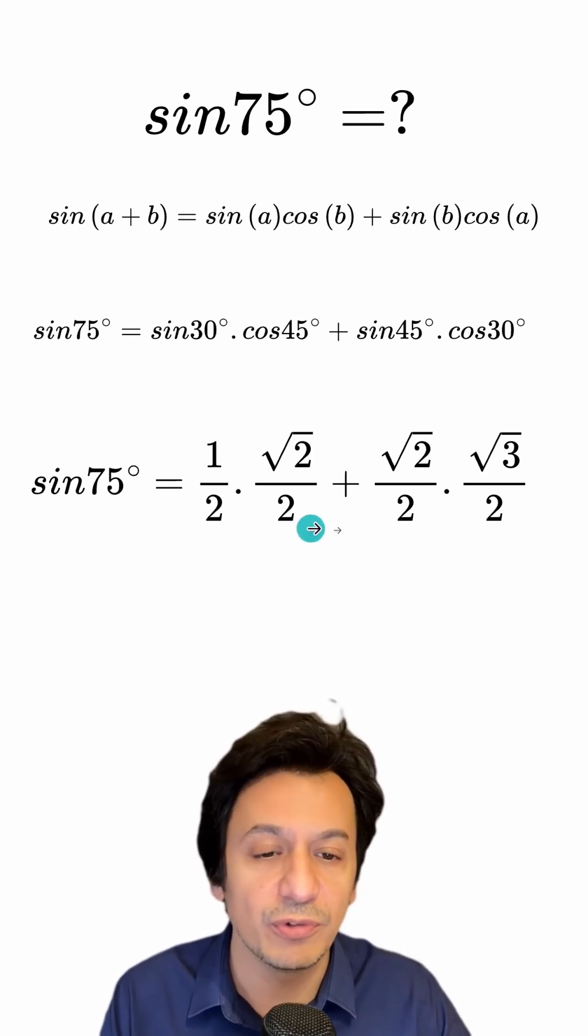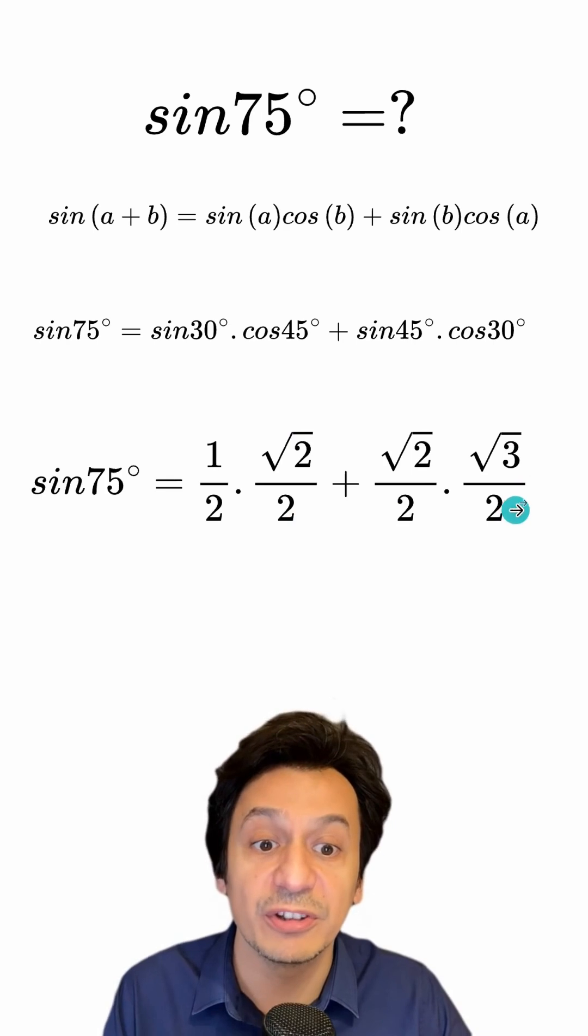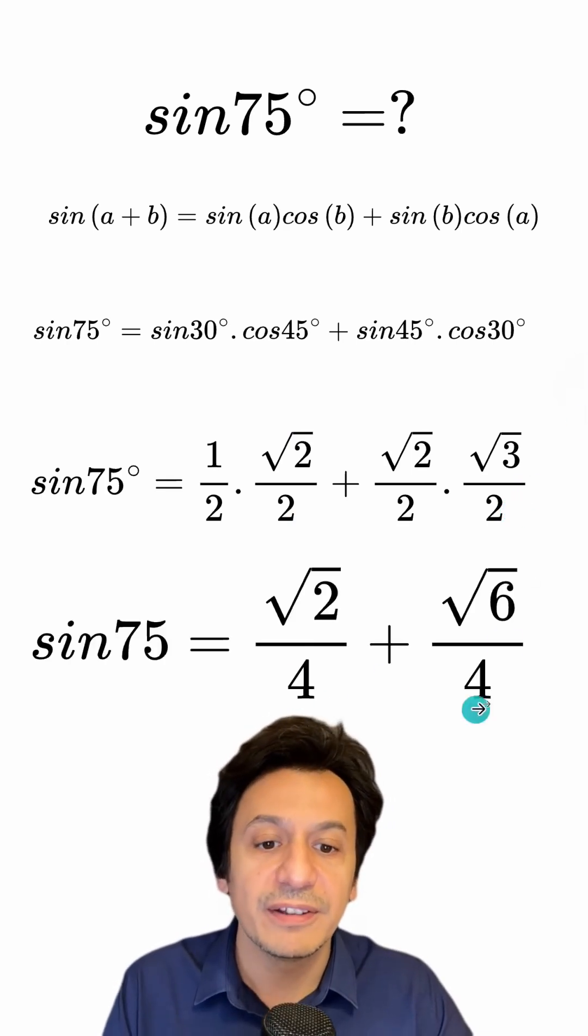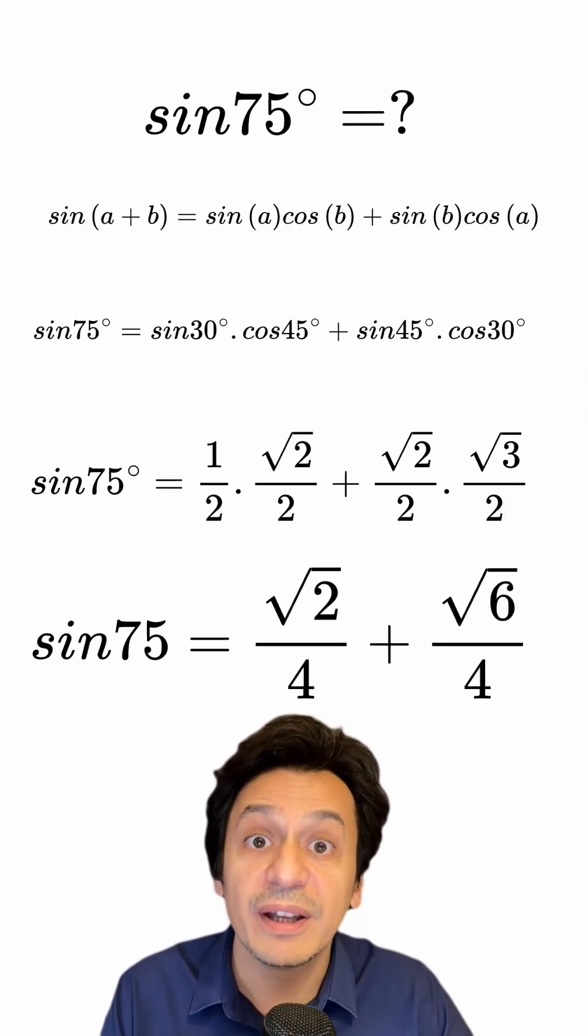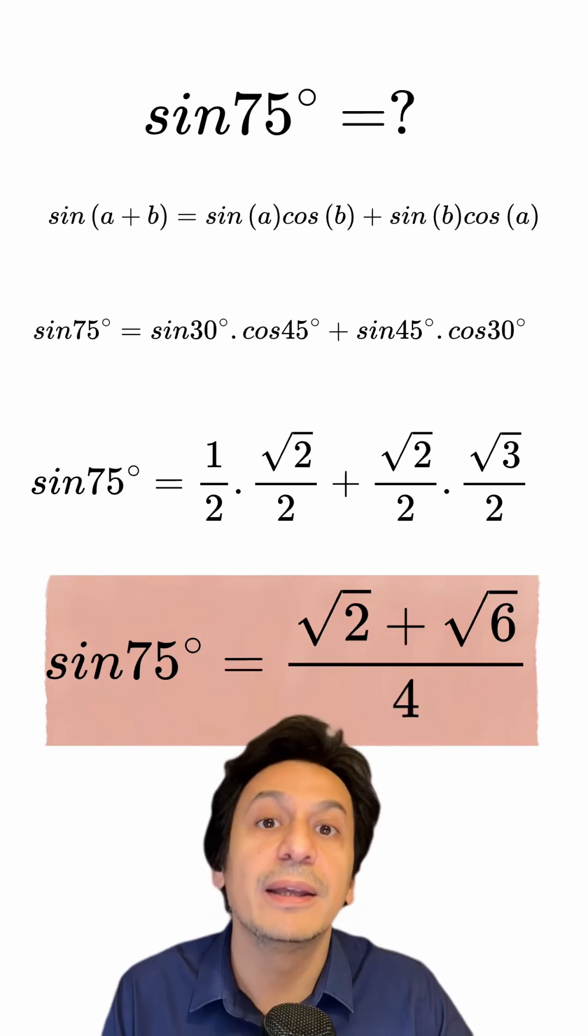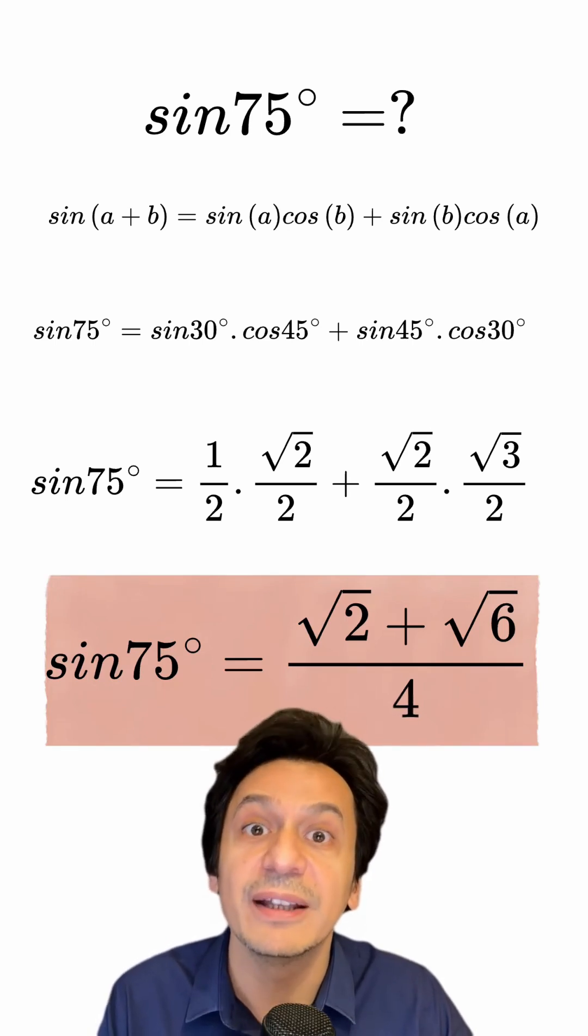The product here will be root 2 over 4, and the product here is root 6 over 4. Since they have a common denominator, I can write them over the same denominator, and in this way I have found the value of sine 75.